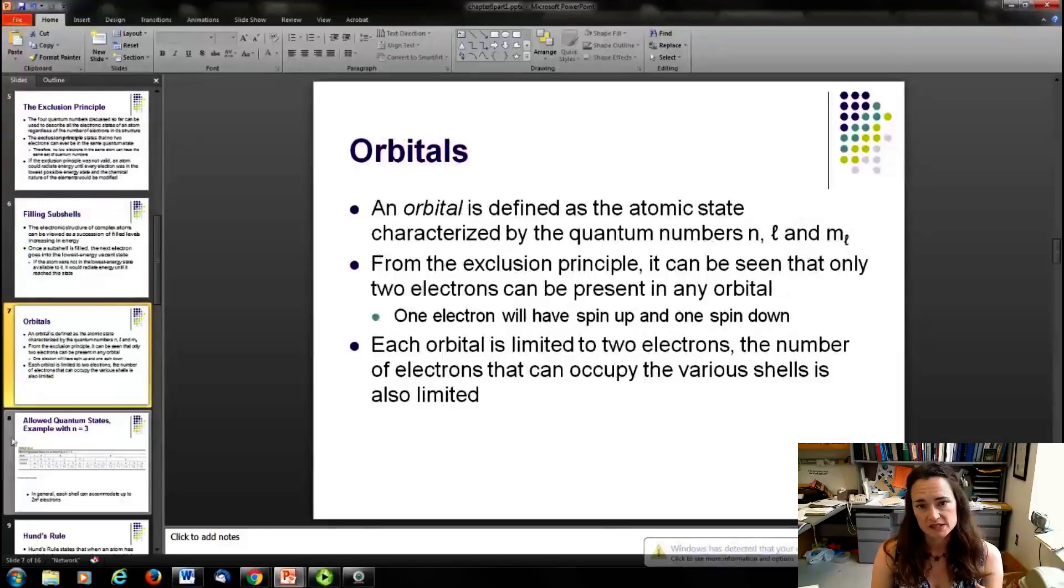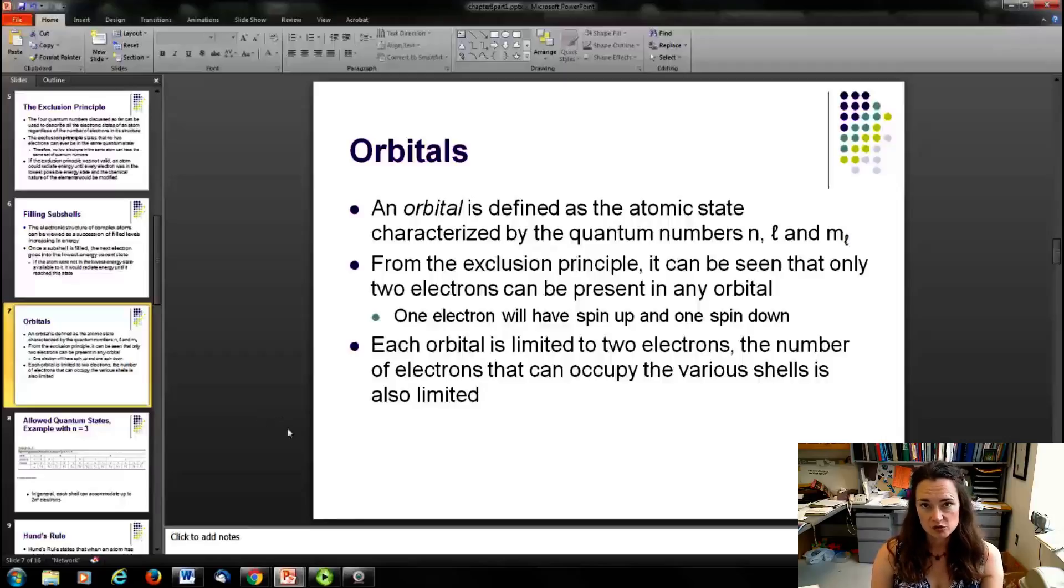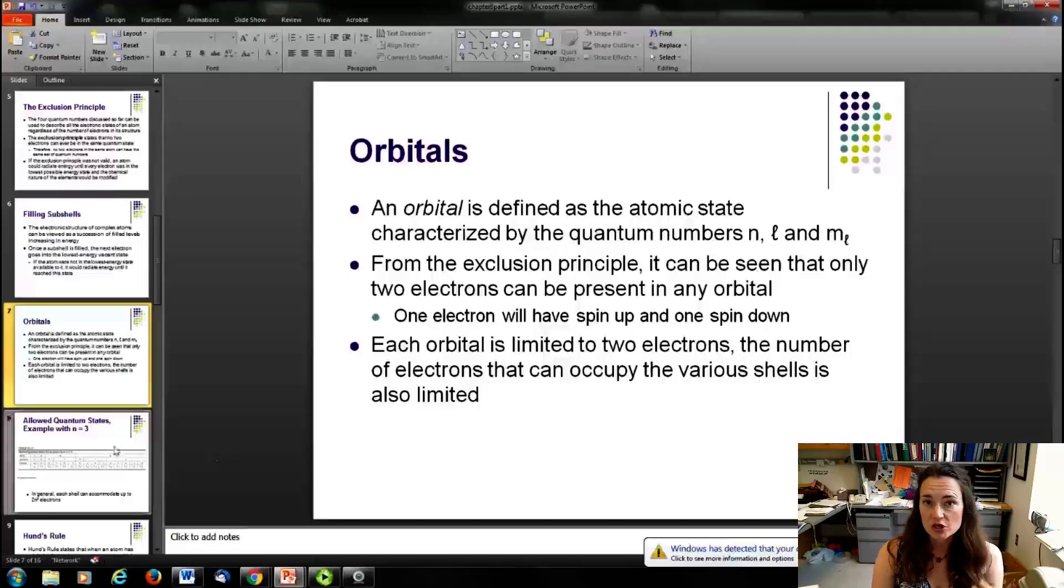We're going to define an orbital as an atomic state that's characterized by the quantum numbers n, l, and m sub l. From the exclusion principle, you can see that each value of m sub l can have, at most, two electrons, one spin up and one spin down in that state. So each orbital is limited to two electrons. Remember that once you've set your value of n, that restricts your possible values of l. l can only go up to n minus one, starting at zero and going up to n minus one. Once you've picked your l value, your m sub l values are dictated. Your m sub l values run from minus l to plus l in integer steps. And then once you've picked your m sub l value, you've got a spin up and a spin down electron that can fit in each one of those.